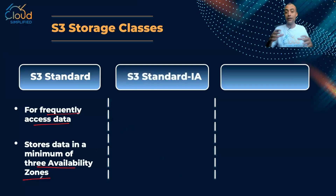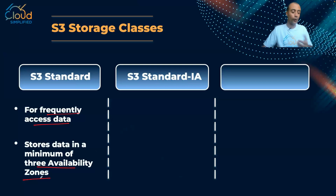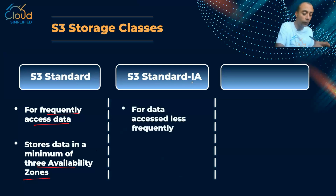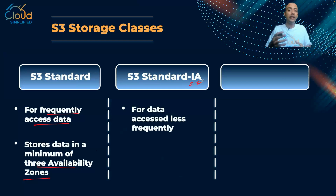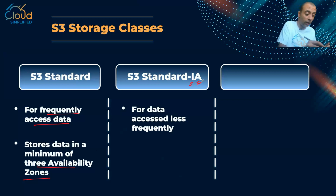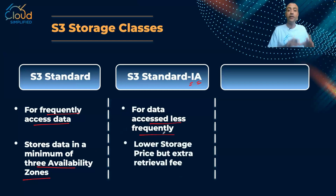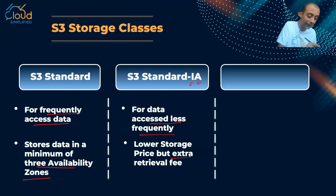The second storage class — and you can get it from the name — is what we call Standard Infrequently Accessed, or Standard-IA. This one is a bit more cost-effective and less expensive than S3 Standard, and this is where I store data that is accessed less frequently. Pay attention though: every time you need to retrieve an object stored in Standard-IA, you will have to pay an extra retrieval fee.